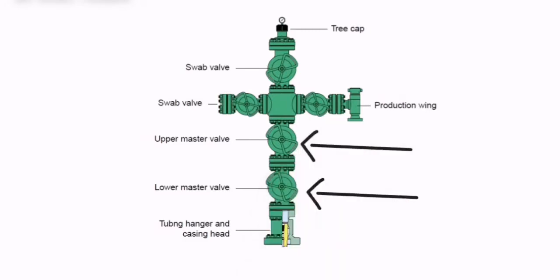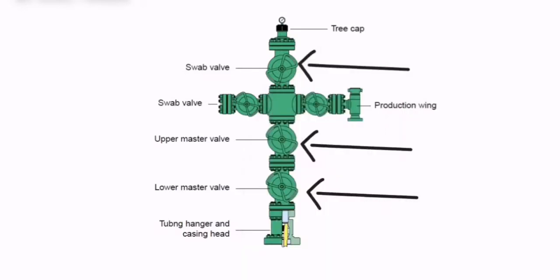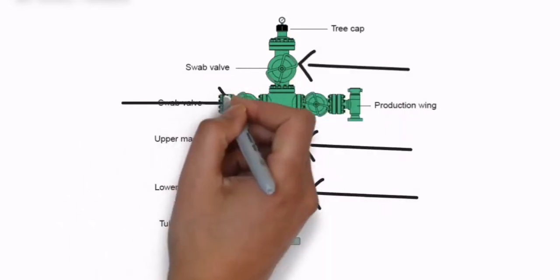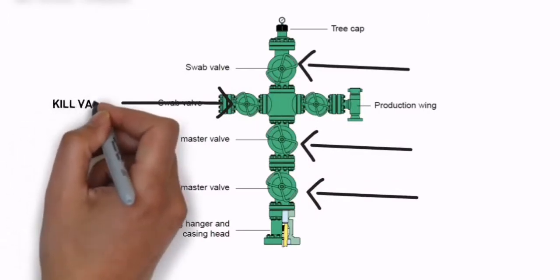Valves of Christmas tree: Lower and upper master valves are used to isolate the well. We have two valves so in case of one valve failure we have a backup one.